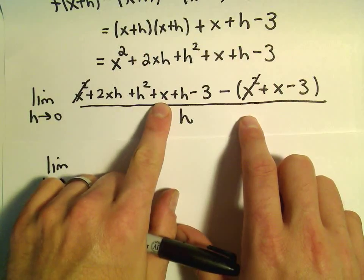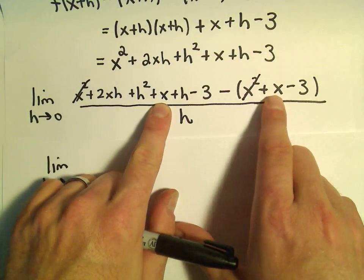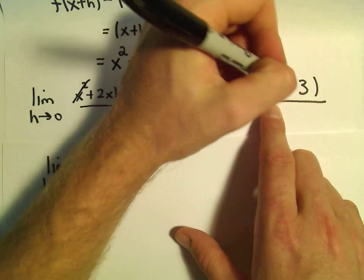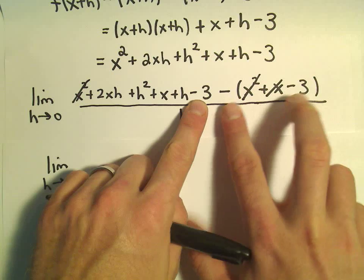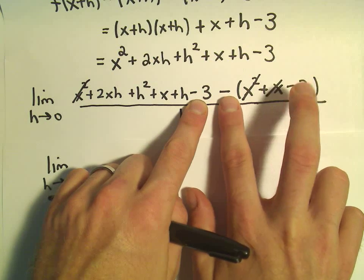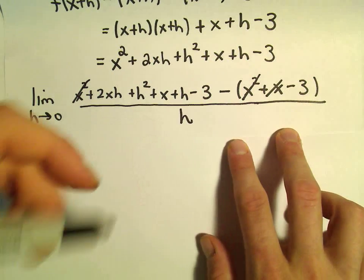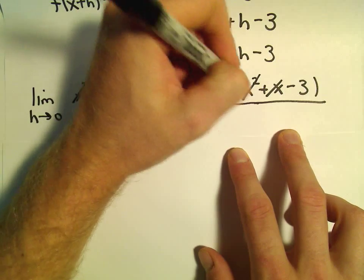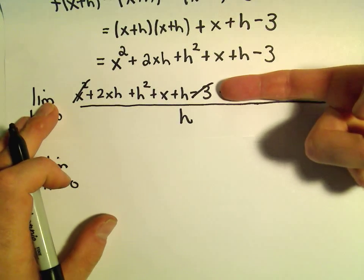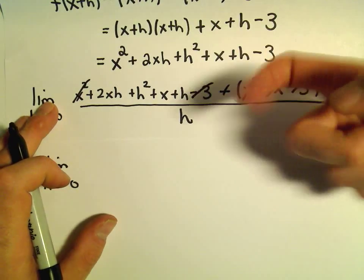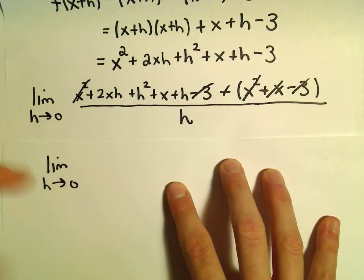It looks like we would have a positive x, and then we would get a negative x when we distribute. So that would also go away. And then we would have a negative 3, and then we would get a plus 3, again, when we distribute the negative. So the negative 3 and the plus 3 would all be gone. So actually, everything, I think, in the second set of parentheses is just going to cancel out when we distribute it.